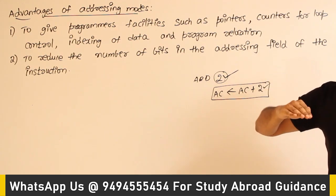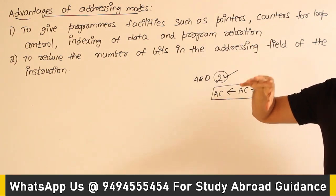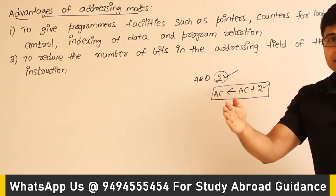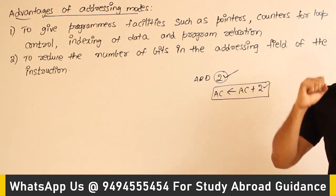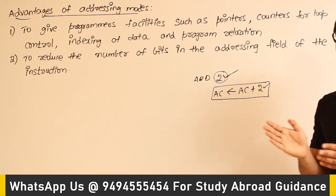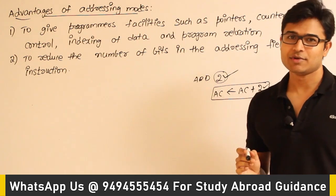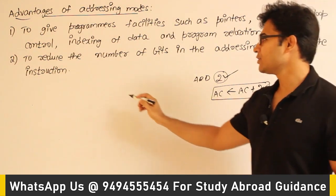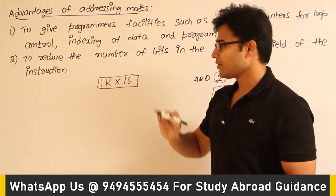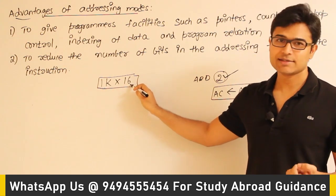Variables can be present either in memory or in a register. If they are in memory, we must provide the memory address, which can be very large. But if they are in a register, the register number will be small. This difference in location changes the size of the instruction. To illustrate: if you have a memory of 1 kilobyte (1K × 16), you have 1024 locations, each of size 16 bits.